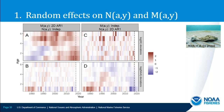Next question: attributes related to Mohn's rho should be evaluated relative to the extent that new data become down-weighted — how do observation and process errors change or increase relative to input variances and CVs? You can look at how those change under the different models.